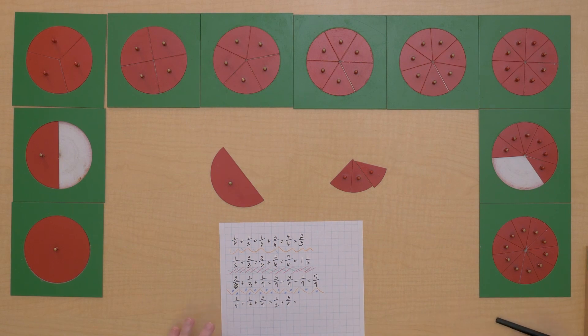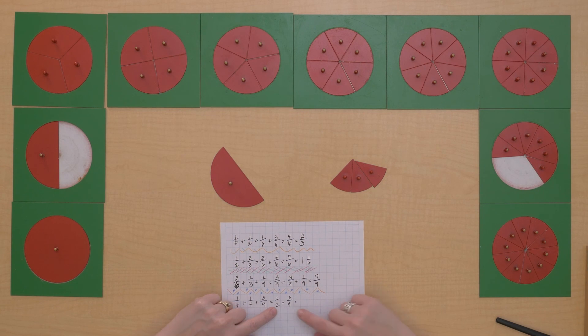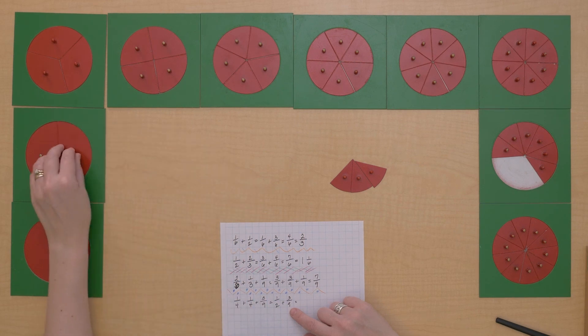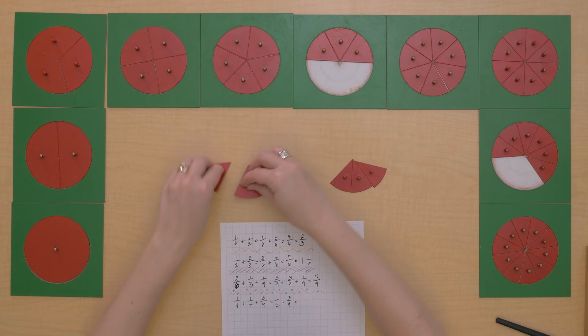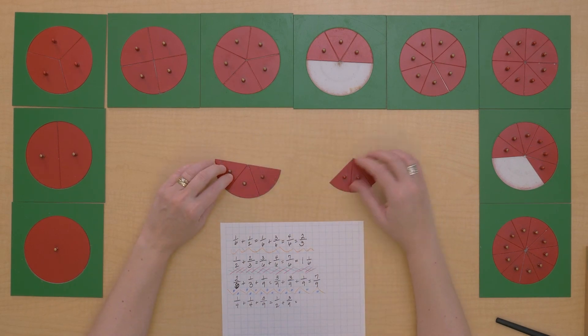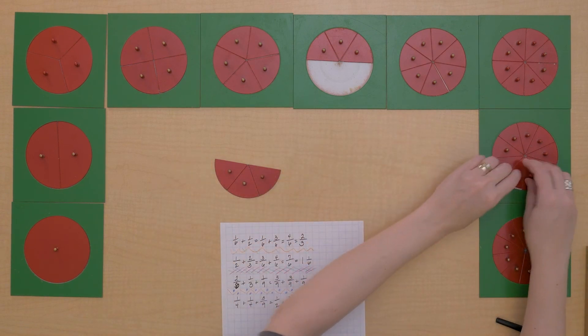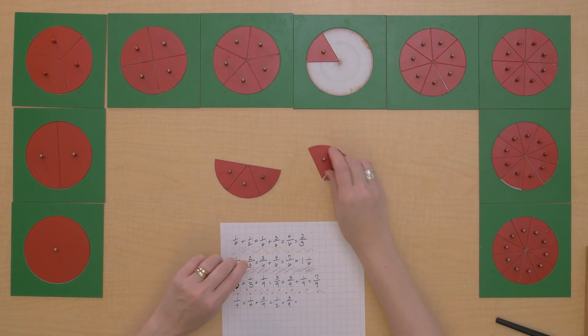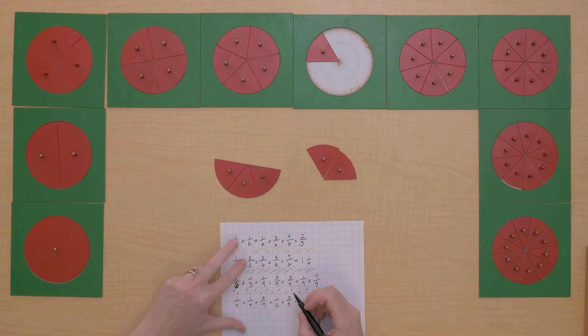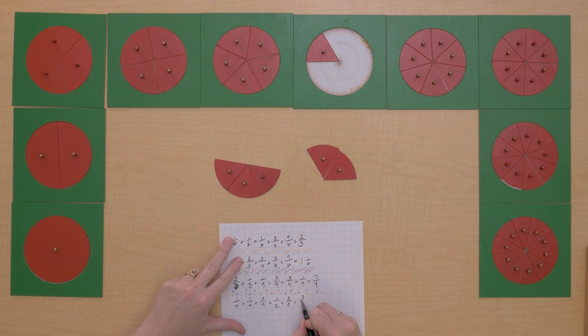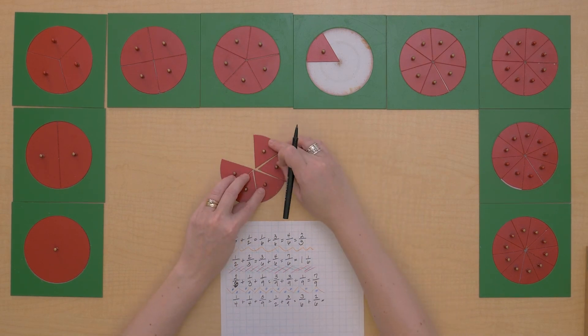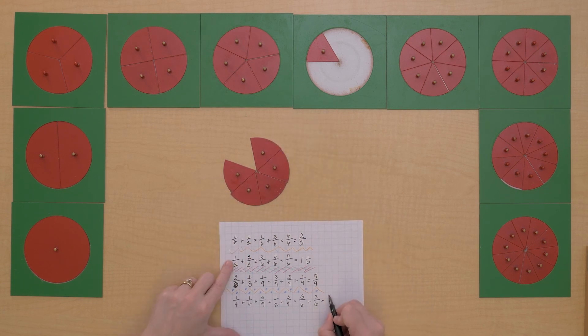Is there an equivalent fraction for both of these, halves and ninths, something that they share? What about sixths? I did three-sixths and this would be two-sixths. So I've changed this to three-sixths plus two-sixths, which equals five-sixths.